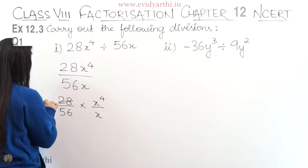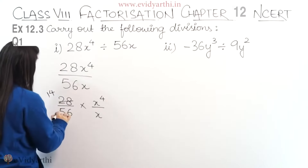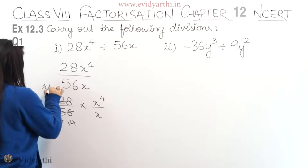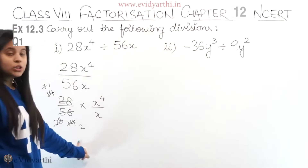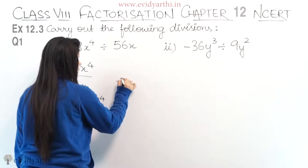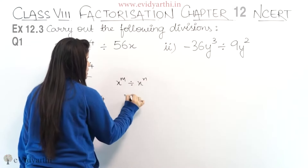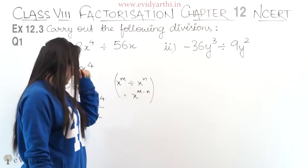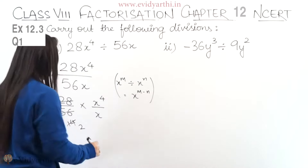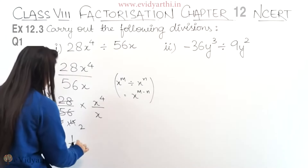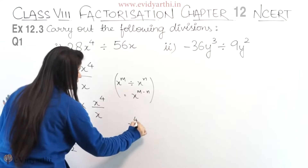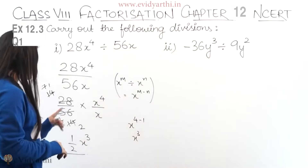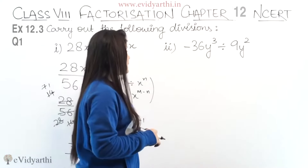Now we simplify 28 divided by 56, which gives us 1 upon 2. Then for the variables, we know that x raised to the power of m divided by x raised to the power of n is equal to x raised to the power of m minus n. So x⁴ divided by x gives x raised to the power of 4 minus 1, which is x raised to the power of 3. So the answer is 1 upon 2 x raised to the power of 3.